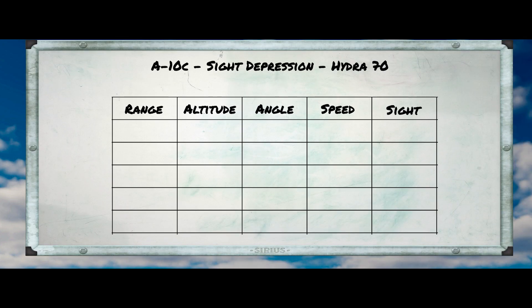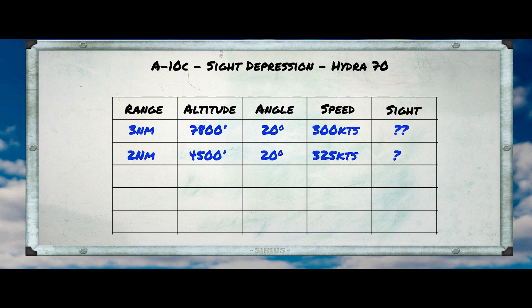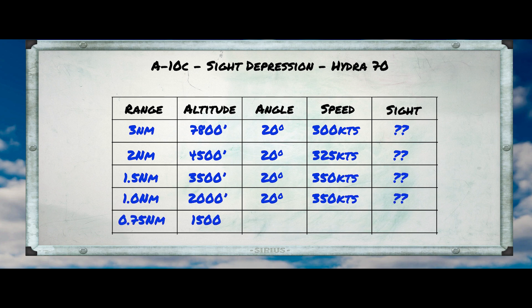The idea of the range runs was to build a site depression table for the A-10 by looking at where the CCIP computer projected that the rockets would land based on the range to the target. Now, we don't really need a site depression table for the A-10 since we have a CCIP computer.